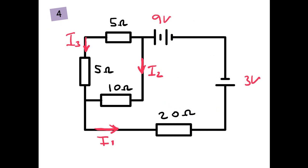Okay, now this time be careful — we've got two batteries: a set of cells giving 9 volts and a cell giving 3 volts, but be careful of the direction. I want you to find I3, I2, and I1 as well.